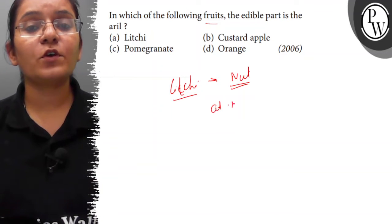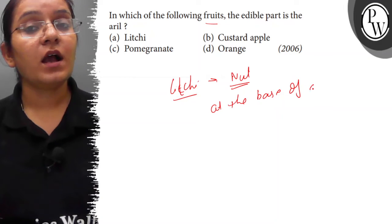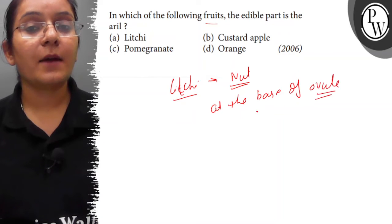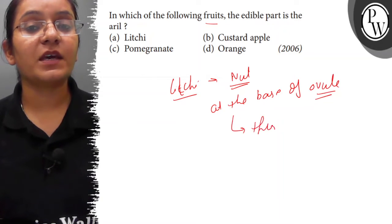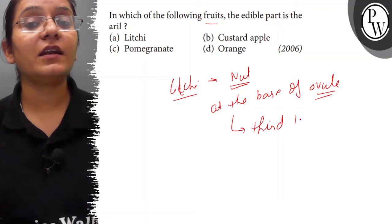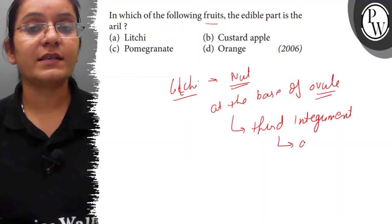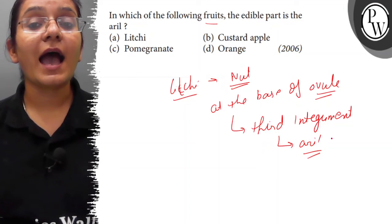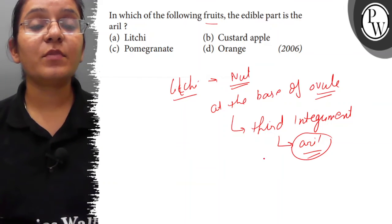At the base of the ovule, a collar-like growth appears and that collar-like growth appears as a third integument. This collar-like growth is known as the aral, and this is the edible portion. That aral is the edible portion of the lychee.